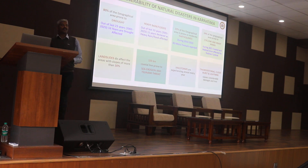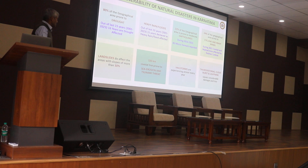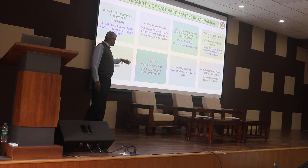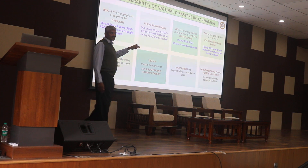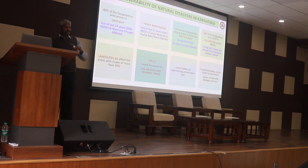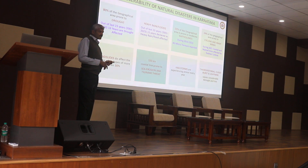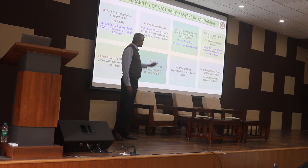Landslides occur only in hilly regions — the Western Ghats, which we call Sahyadri — which are more prone to landslide conditions. The state has a 320-kilometer coastline prone to sea erosion and tsunami threats. Other disasters include hailstorms, and every year thunderstorms and lightning activities cause human and animal casualties, as well as crop damage due to hailstorm activities.